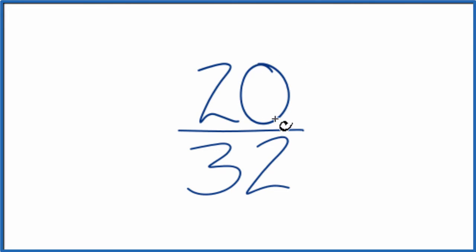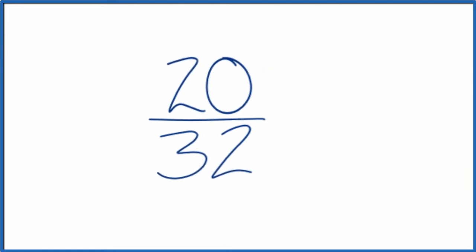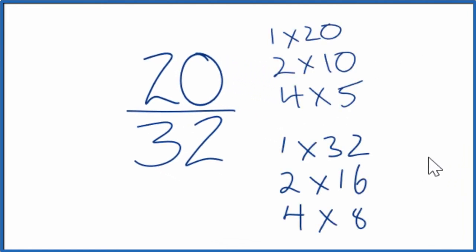So let's write the factors for 20 and 32 so we can find a common factor, a factor that goes into 20 and 32. So here's the factors for 20 and 32. I'm looking for the greatest common factor here, and it looks like the greatest common factor is four.